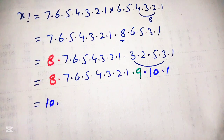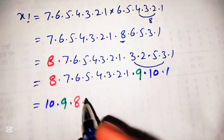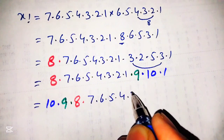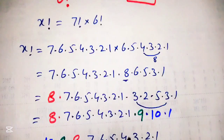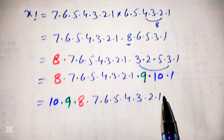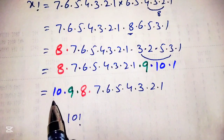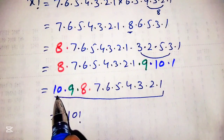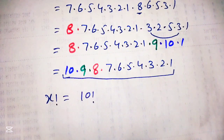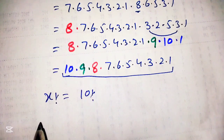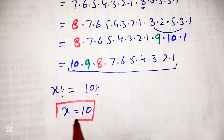So we can write it as 10 into 9 into 8 into 7 into 6 into 5 into 4 into 3 into 2 into 1. We can see that these numbers come from the simplification of 6 factorial, and we convert it into a proper sequence which can be written as 10 factorial. So the total term is equal to 10 factorial, and hence x factorial is equal to 10 factorial. Cancelling the factorials, we get x is equal to 10, which is the final answer.